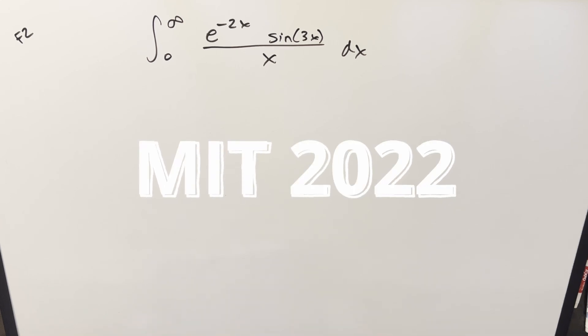Okay, we have an interesting integral from the MIT integration bee 2022, finals number 2. We have the integral from 0 to infinity, e to the minus 2x times sine 3x over x dx.